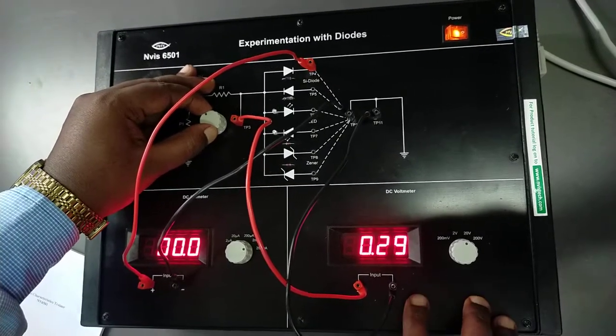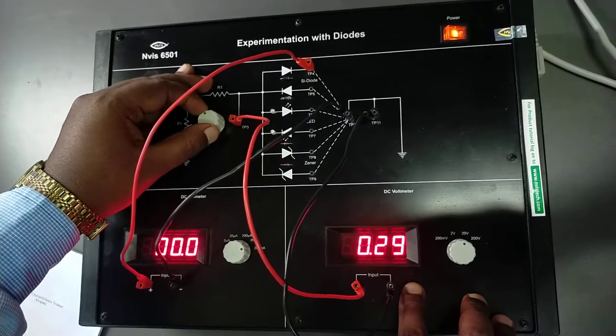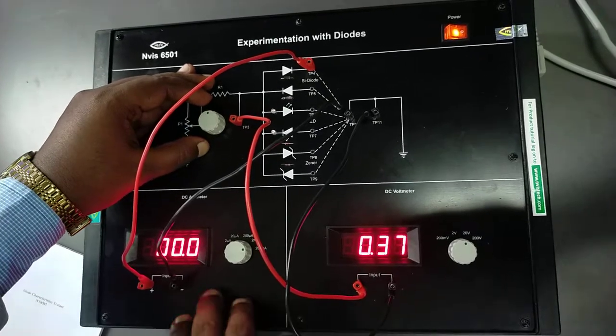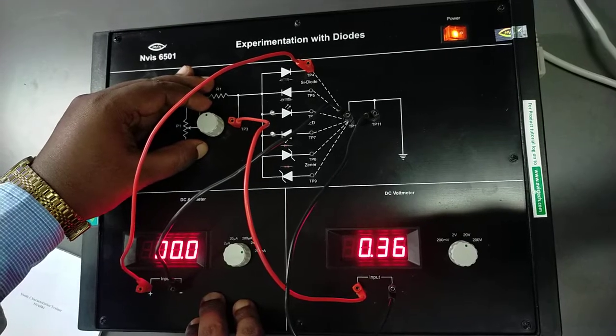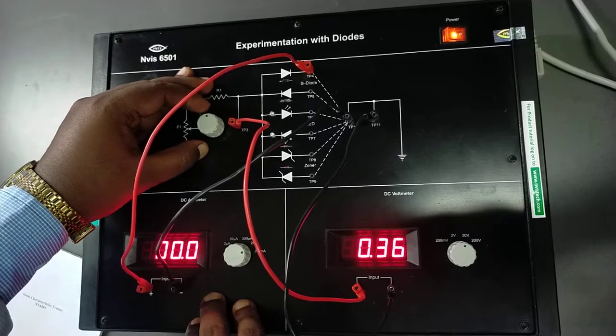As you can see here, I am increasing the voltage across the silicon diode, but we are still getting zero milliamps corresponding in the ammeter.